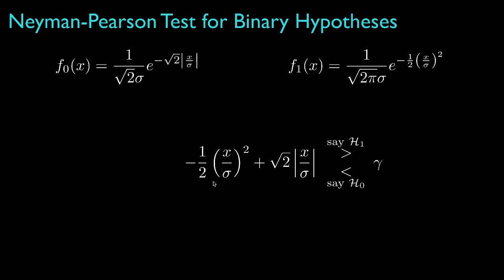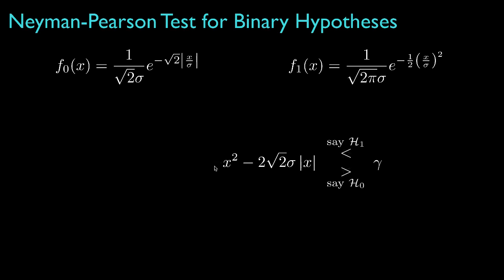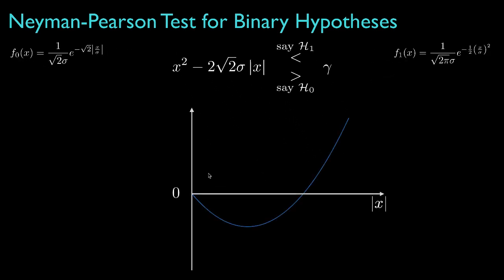To simplify the decision rule, we multiply both sides by two times sigma squared, absorbing the positive term into the threshold. We could also multiply both sides by negative one, which reverses the inequalities for the decisions. The term on the left prescribes how we process the data: because it involves x squared and the absolute value of x, we can think of the decision rule as a function of the absolute value of the observation. Here is a plot of the left-hand side as a function of the absolute value of x.